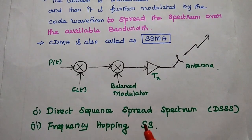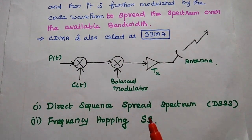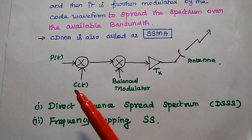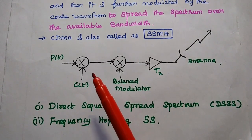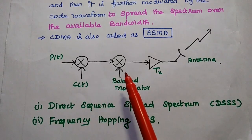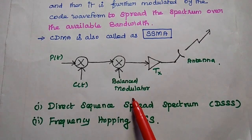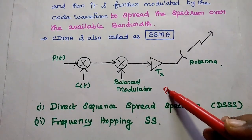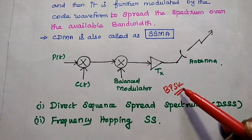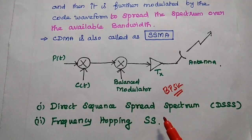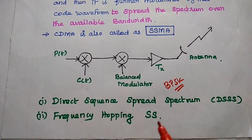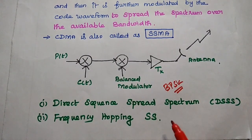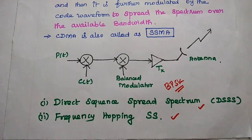In the basic CDMA transmitter diagram, P(t) is the information signal and C(t) is the code waveform. Both are given to a multiplier, and the output is given to the next multiplier — the balanced modulator — which produces the BPSK signal at the proper uplink frequency. There are two types of spread spectrum: direct sequence spread spectrum and frequency hopping spread spectrum, both used in CDMA.